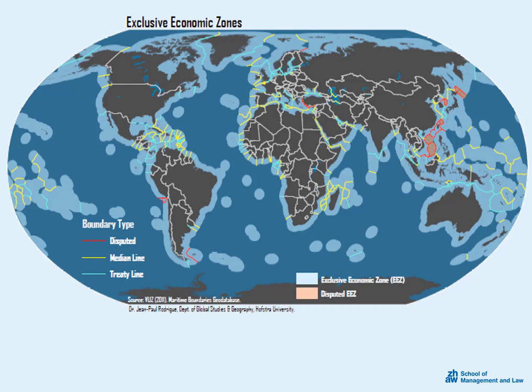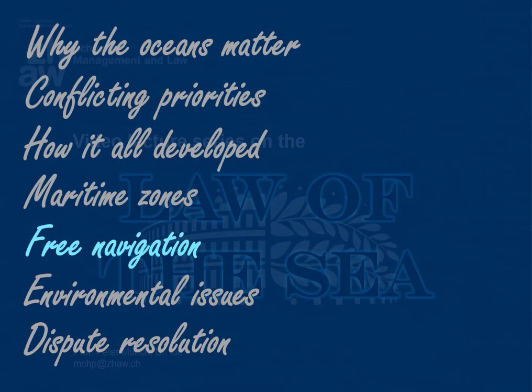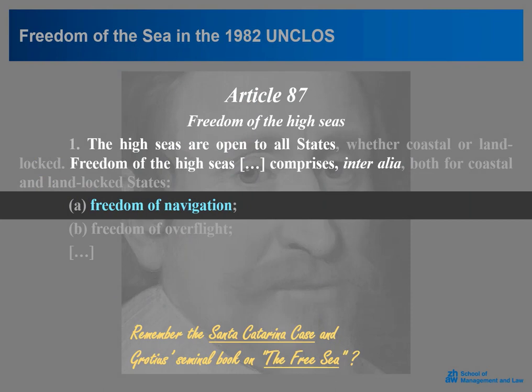Thanks to the UN Convention, coastal states have been able to expand their jurisdiction and control to large ocean areas. In that sense, the Convention has probably sanctioned the largest territorial grab in history. Despite the increased focus on coastal states' rights in the sea areas along their coast, free navigation also remains a central concern for current maritime law. In Article 87 — behind which we can clearly recognize Hugo Grotius — the United Nations Convention on the Law of the Sea explicitly guarantees freedom of navigation.